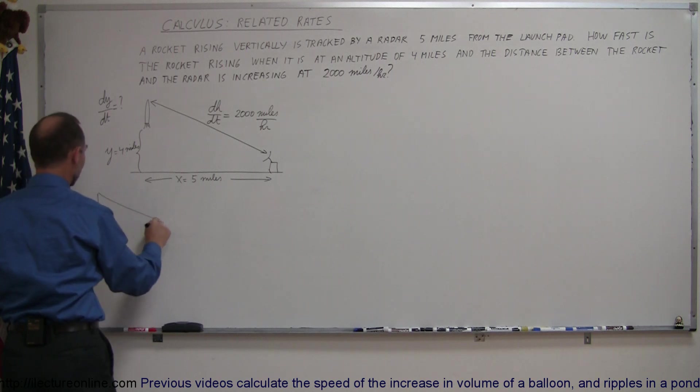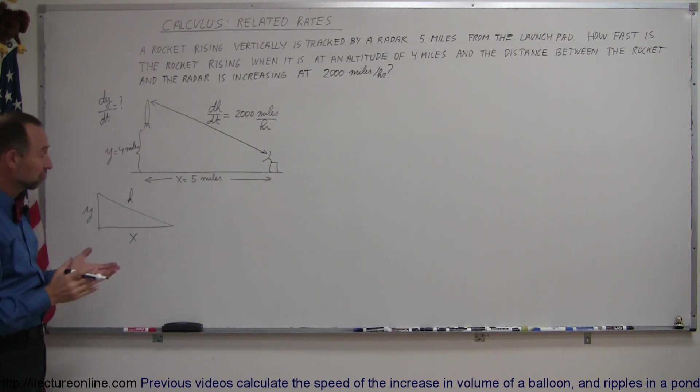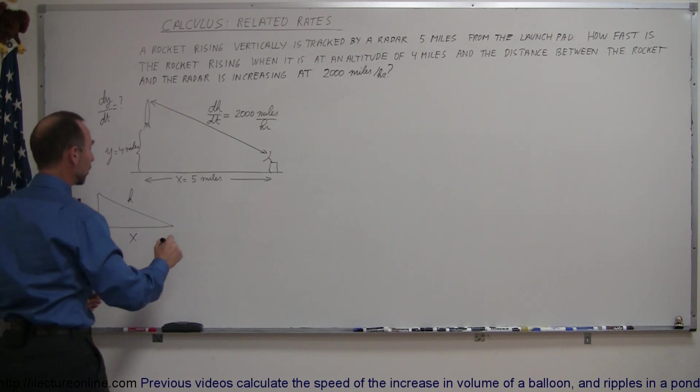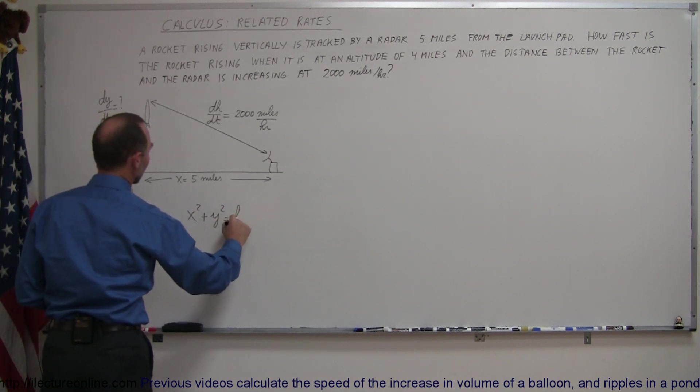So we have ourselves a triangle, like so. This is the hypotenuse. This is x. This is y. So, using the Pythagorean theorem we can say that x squared plus y squared equals h squared. So we have x squared plus y squared equals h squared.